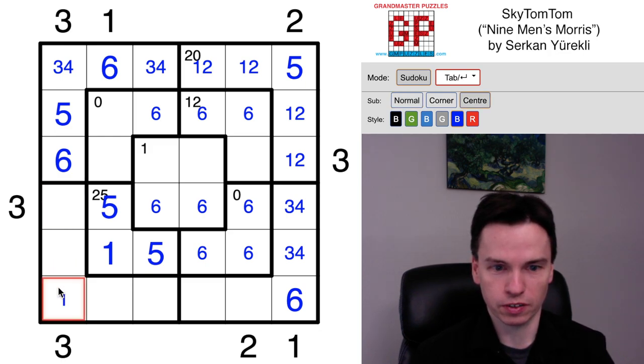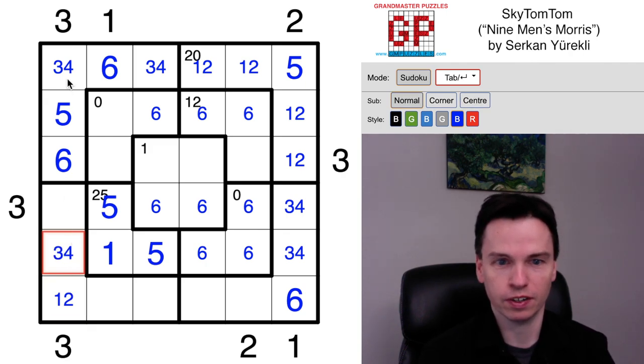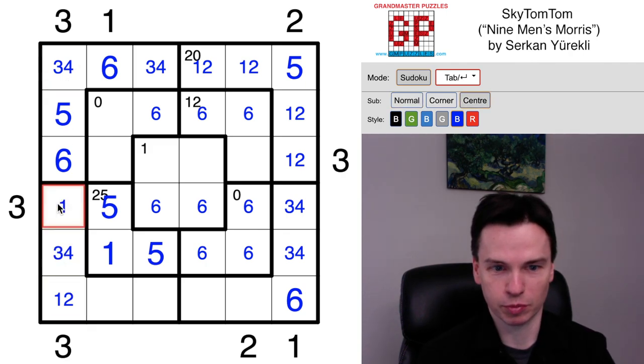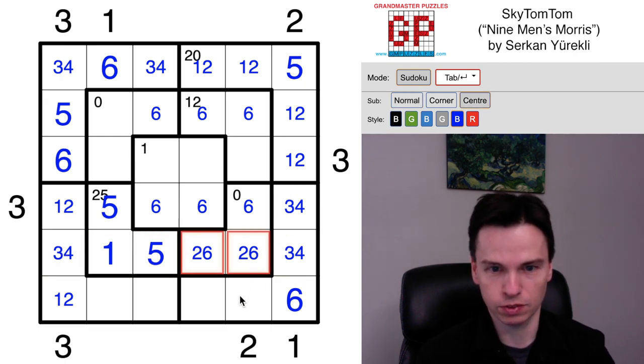So this building can't be a one and it can't be a two for what we were just describing. This has to be a three-four, and that actually looks like it sets up a really neat set of deductions pretty quickly.